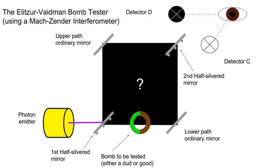The bomb test is an interaction-free measurement. The idea of getting information about an object without interacting with it is not a new one. For example, there are two boxes, one of which contains something, the other of which contains nothing. If you open one box and see nothing, you know that the other contains something without ever opening it. This experiment has its roots in the double-slit experiment and other more complex concepts it inspired, including Schrödinger's cat and Wheeler's delayed-choice experiment.